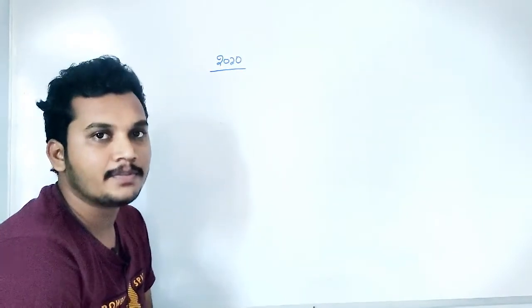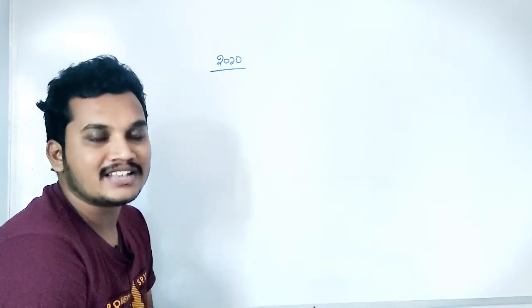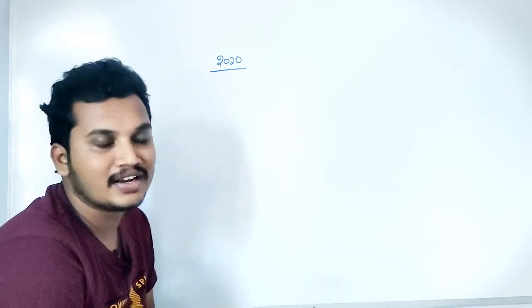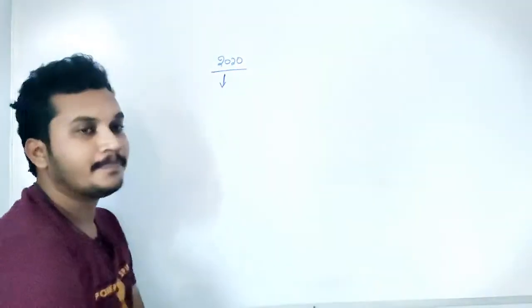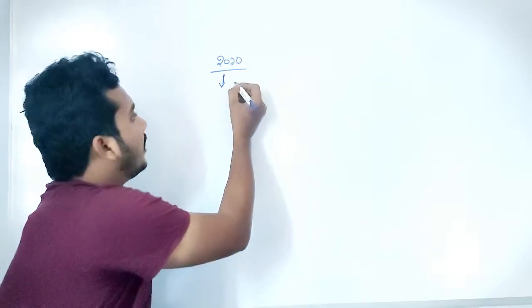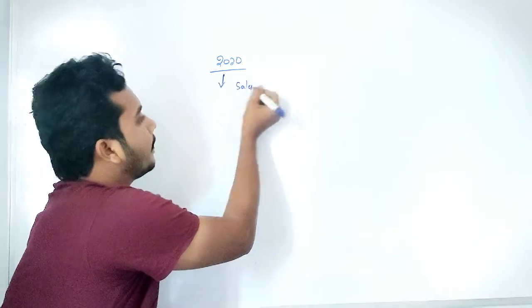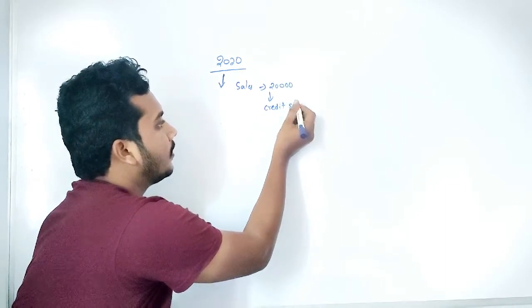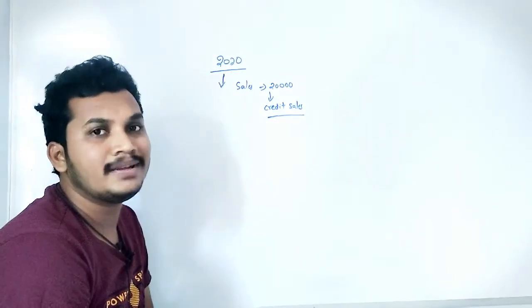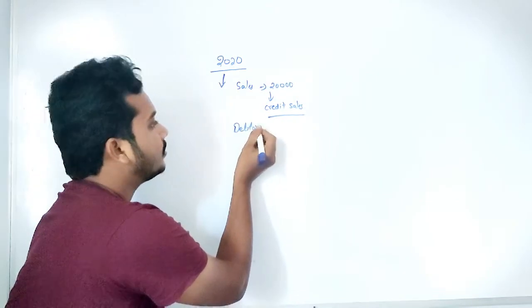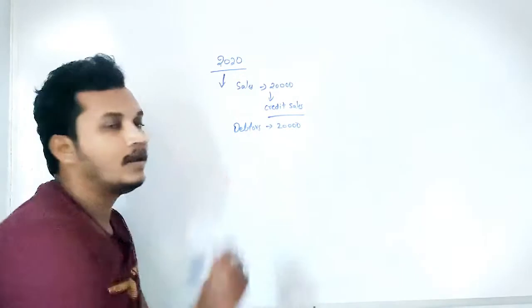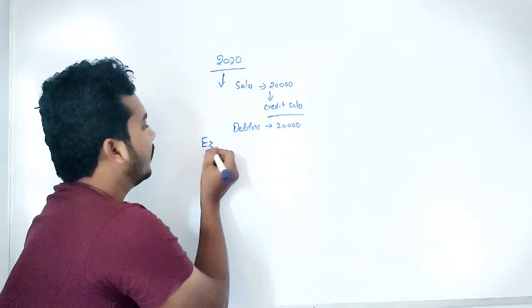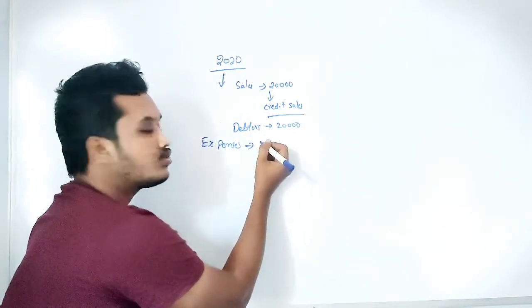The reason we show provision for bad debts — or any other provision — as a credit balance is because of how we prepared final accounts in the previous year. Let's take an example. This is year 2020. In 2020, let's say we made sales of 20,000, which are credit sales. Assuming there are expenses amounting to 10,000 rupees.